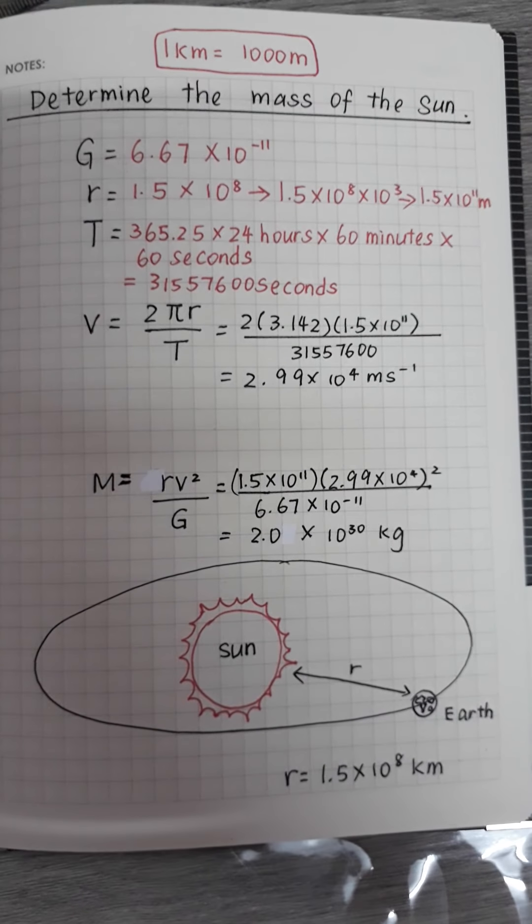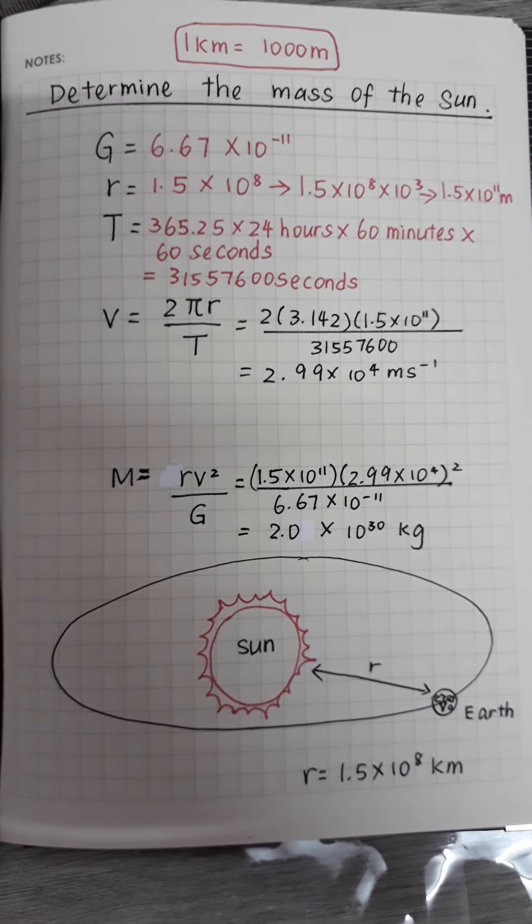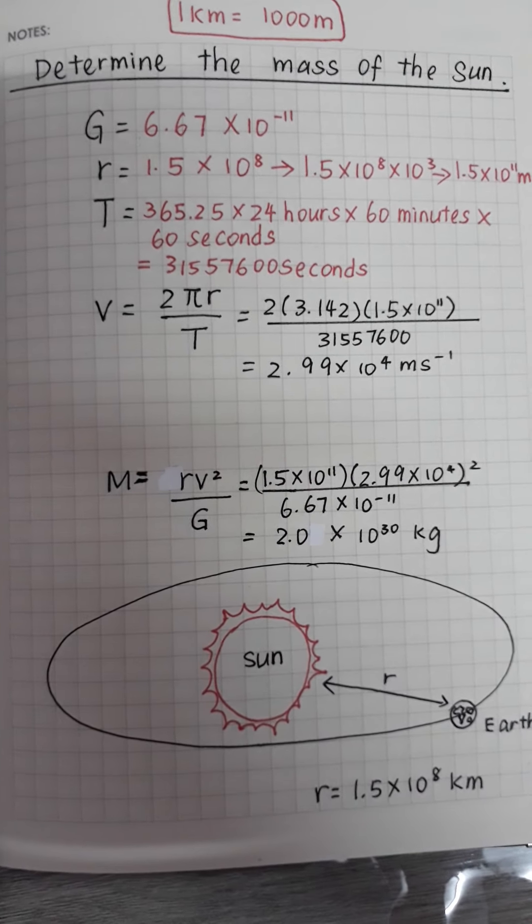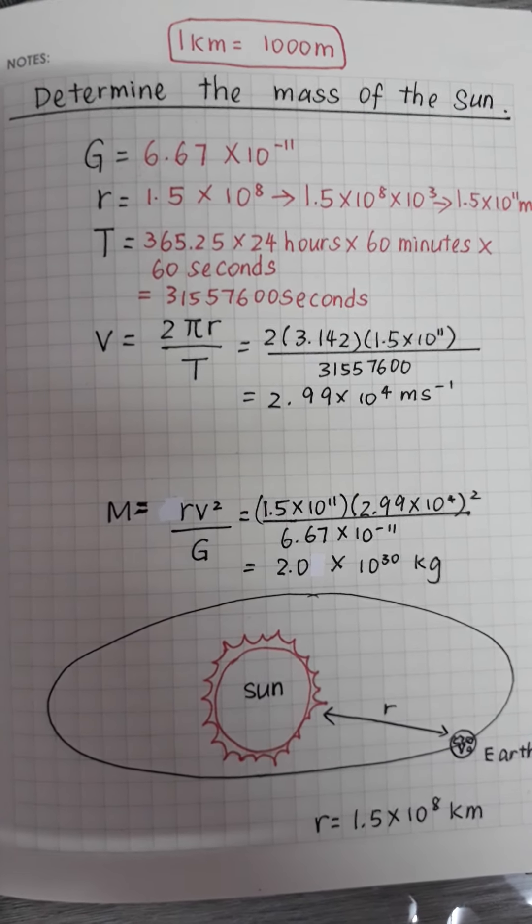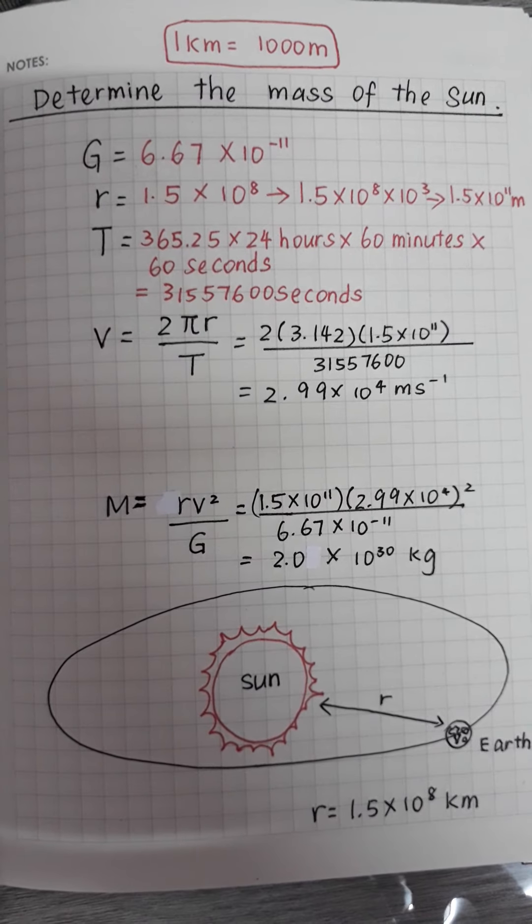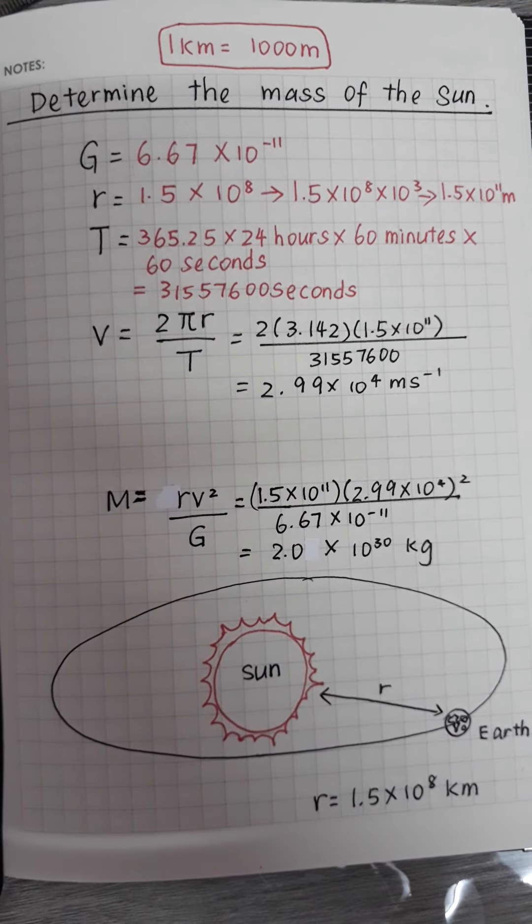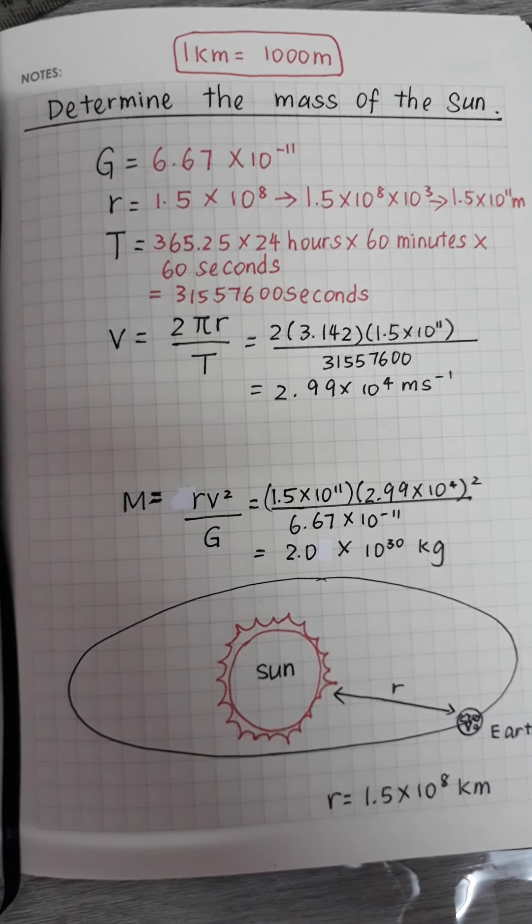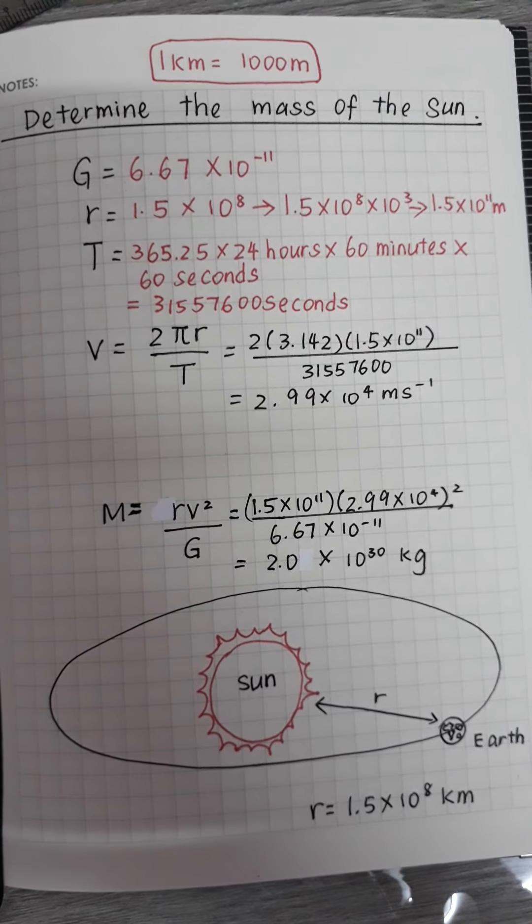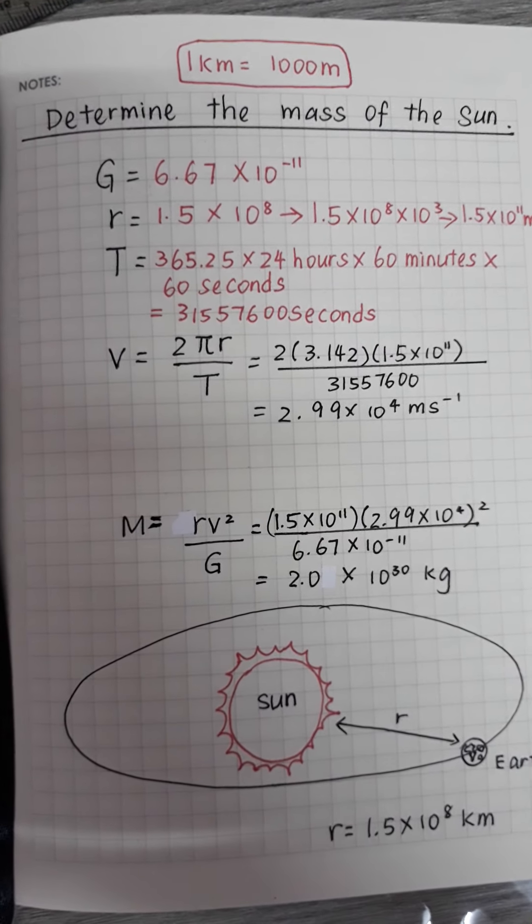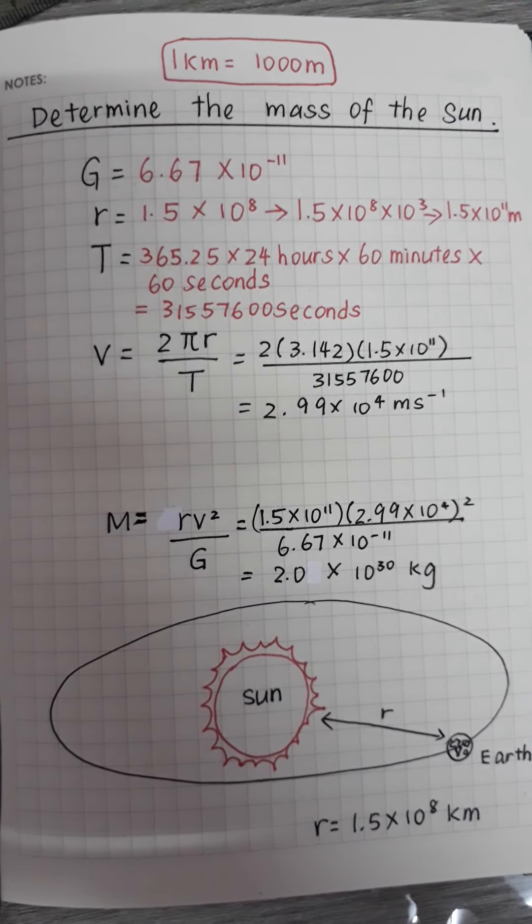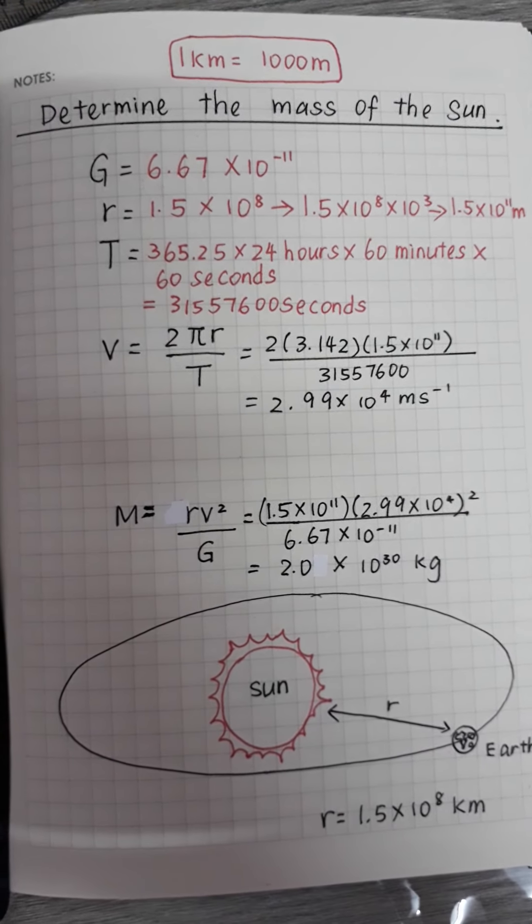v equals 2 pi r over T. Pi is 3.142 and r is 1.5 times 10 power of 11 over T which is 31557600, equal to 2.99 times 10 power of 4 meters per second. That is the velocity.